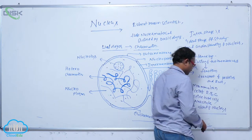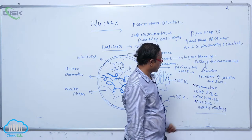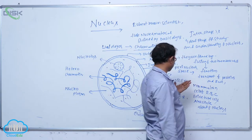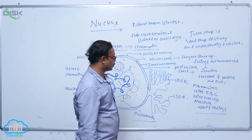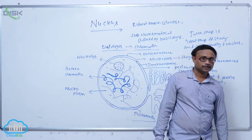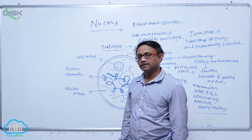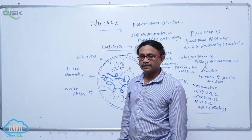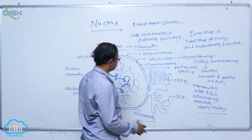Cells are anucleate, meaning absent of nucleus — examples are mammalian RBCs and sieve tube cells. Some cells have more than one nucleus: tapetum cells are binucleate. Some algae, for example yellow algae, show a multinucleate condition, as do some fungi — for example, Rhizopus shows a multinucleate condition.